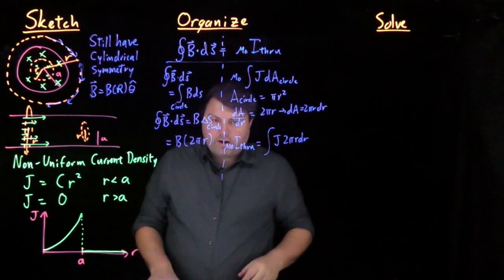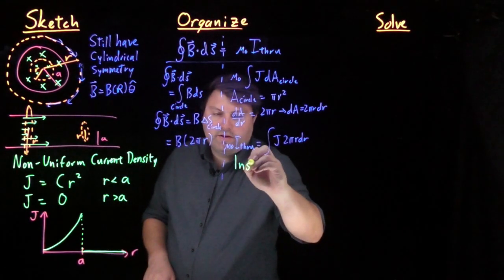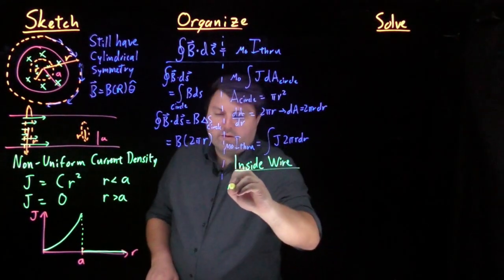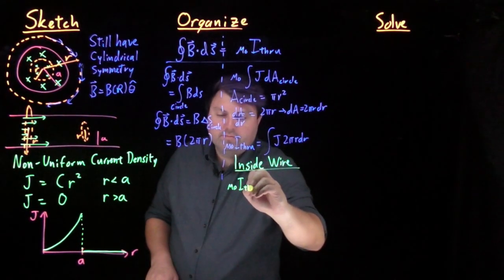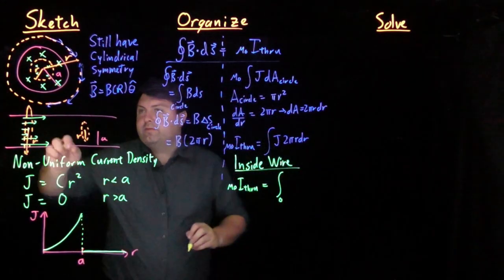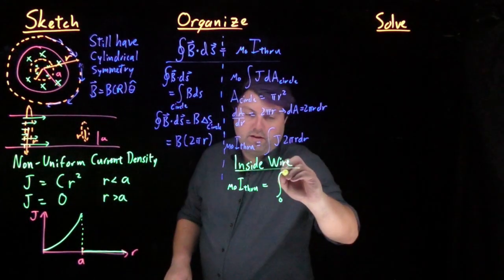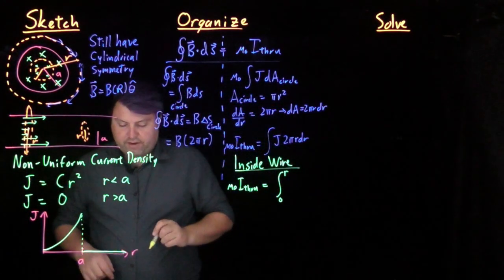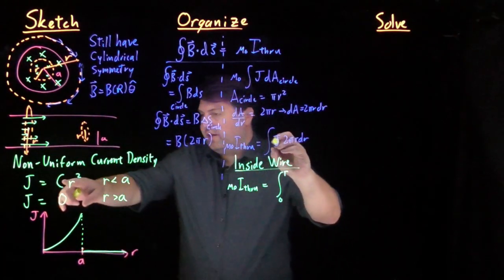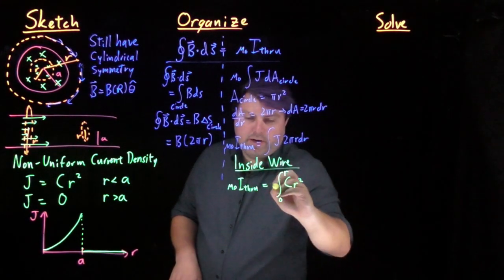So if we are inside the wire, mu naught i through, we start at 0, and we end at the radius r inside of our wire. If we do this, our j is always going to be c times r squared.